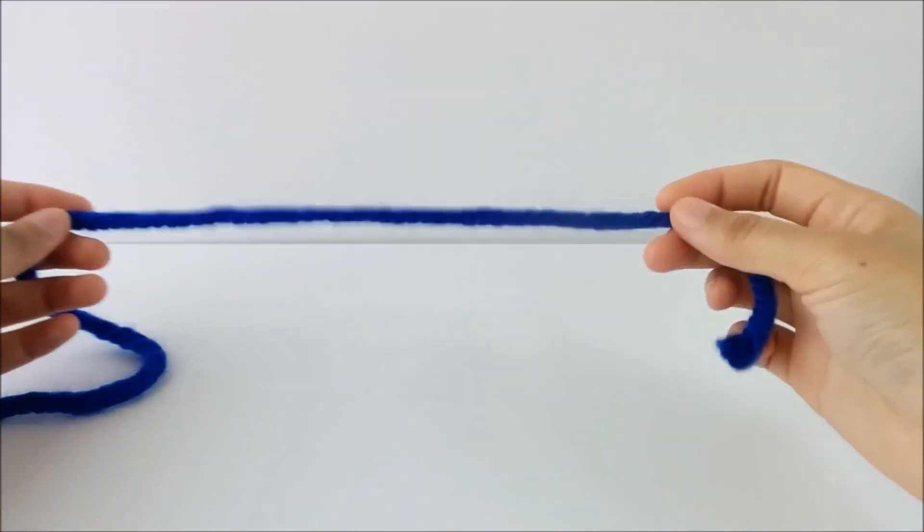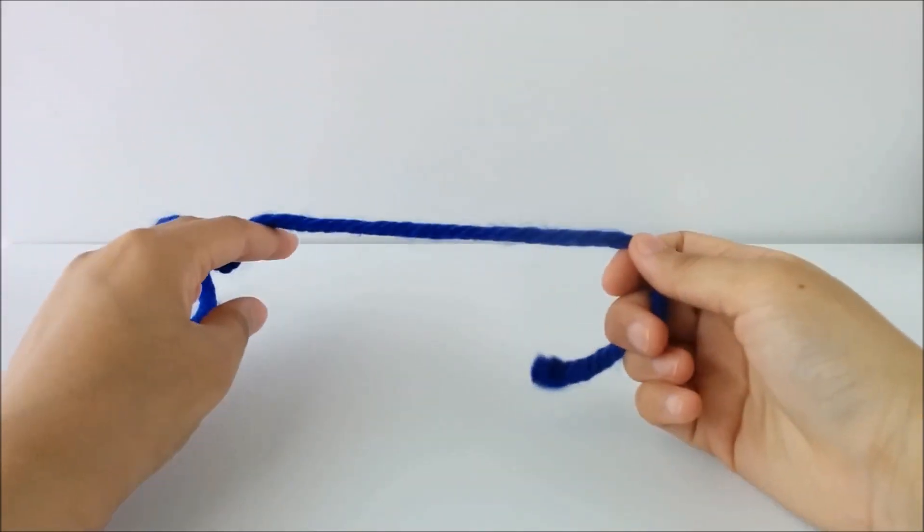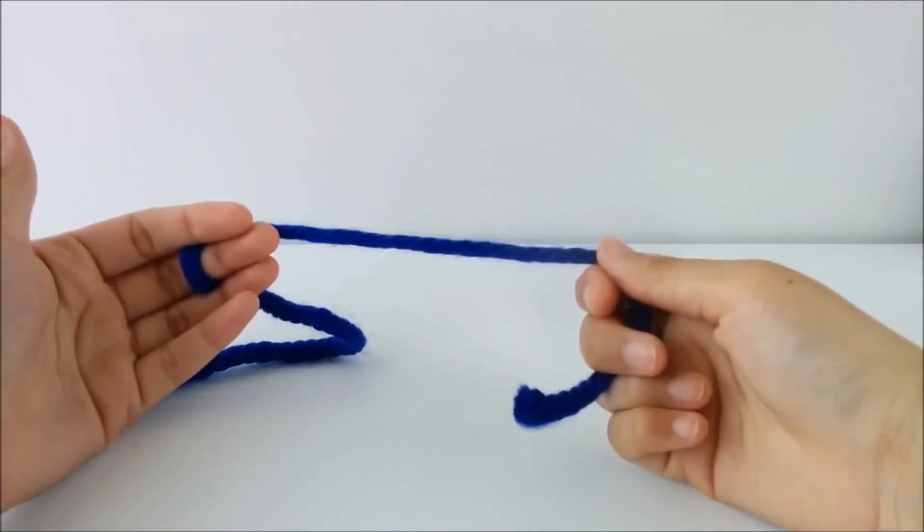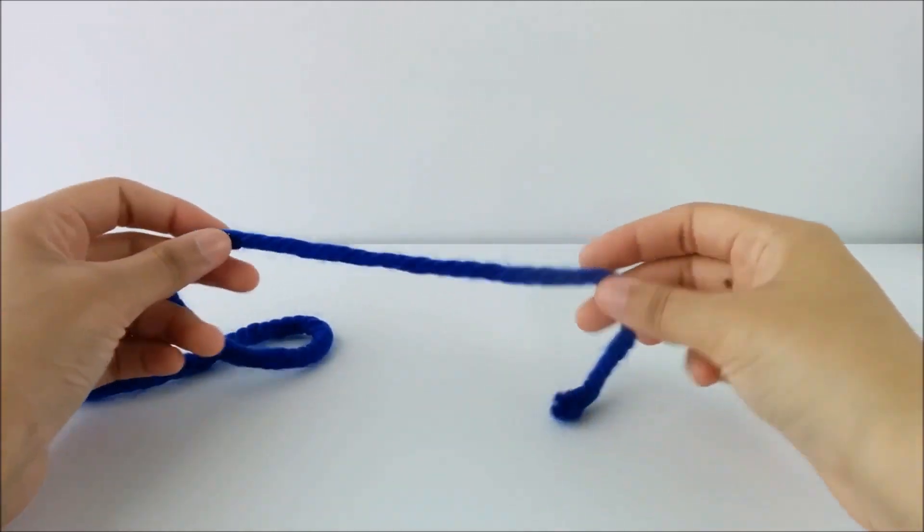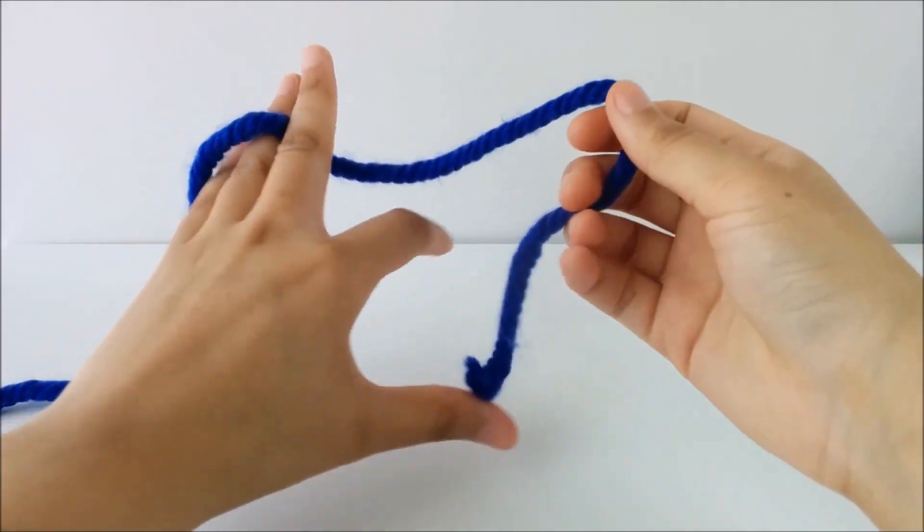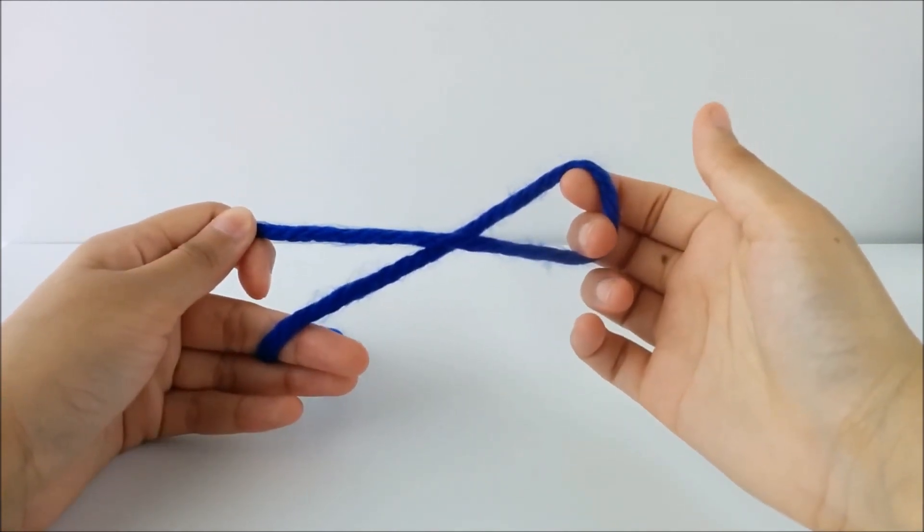So we're going to start by making our slip knot. And a slip knot is what you use to first secure that first loop on your yarn and then make the rest of your project from. So to do this, I hold the yarn in my hands like this and I cross the tail end over the working yarn so it forms that ribbon shape.